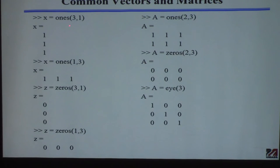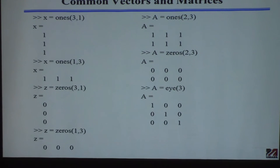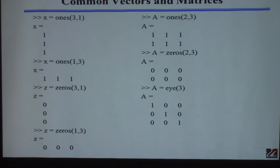These are some special commands built into MATLAB. If you want a vector or matrix of all ones, you use the 'ones' command — I used this in linear regression to create a column of ones for the intercept. You specify the dimensions, like ones(3,1) for a column vector or ones(1,3) for a row vector. Similarly, the 'zeros' command creates vectors or matrices of zeros.